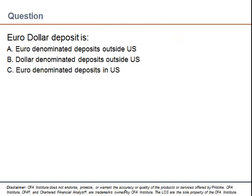Let's solve a few simple questions. Question: 'A euro dollar deposit is euro denominated deposits outside the US' — no, that is not the right answer. The correct answer is dollar denominated deposits outside the US. Recalling the picture with US in the middle and banks outside the US, the right answer is B. Option C, which says euro denominated deposits in the US, is also incorrect.